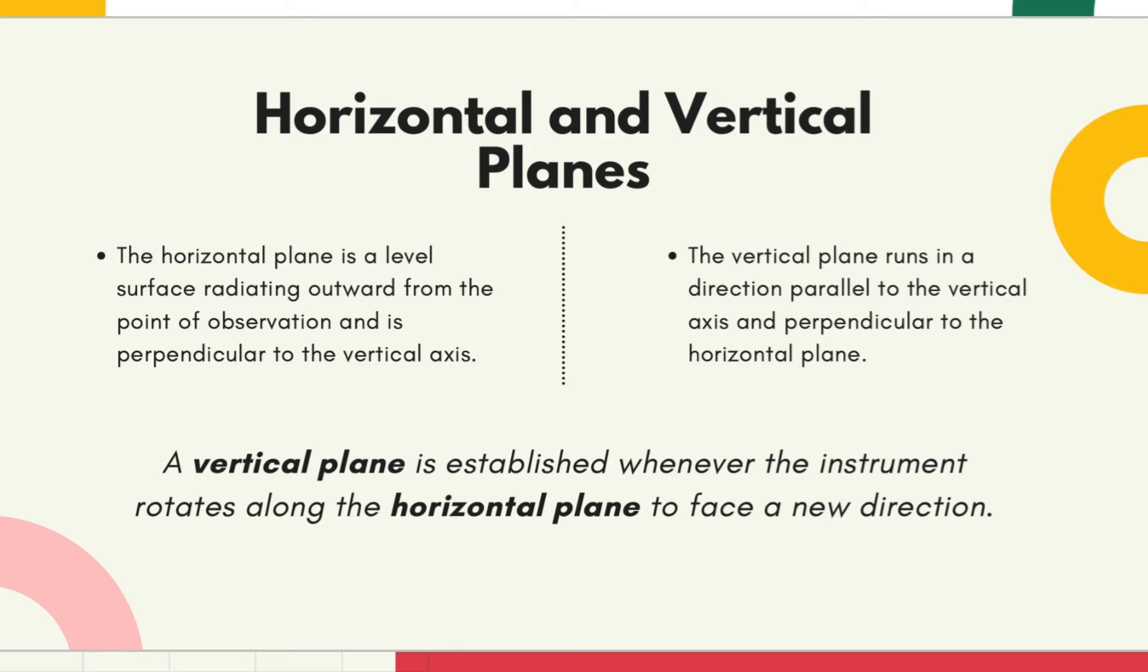Angles and distances are measured relative to either a horizontal or vertical plane. The horizontal plane is a level surface radiating outward from the point of observation and is perpendicular to the vertical axis. The vertical axis, also known as the plumb line, is always parallel to the direction of gravity. The vertical plane runs in a direction parallel to the vertical axis and perpendicular to the horizontal plane.